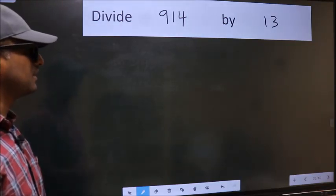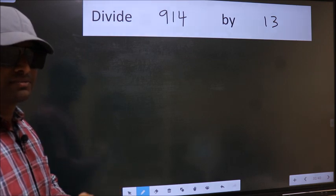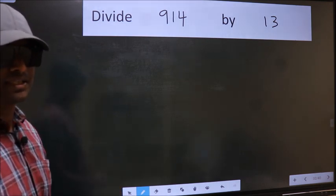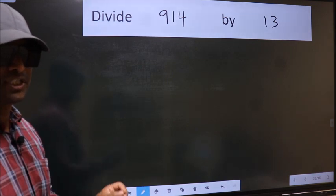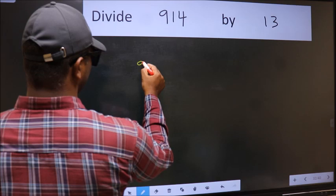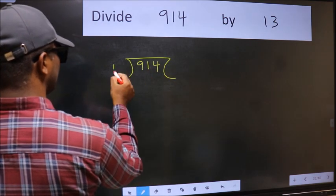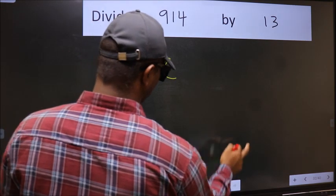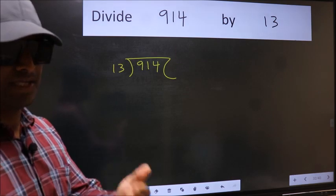Divide 914 by 13. While doing this division, many do this mistake. What is the mistake that they do? I will let you know. But before that, we should frame it in this way. 914 and 13 here. This is your step 1. Next.